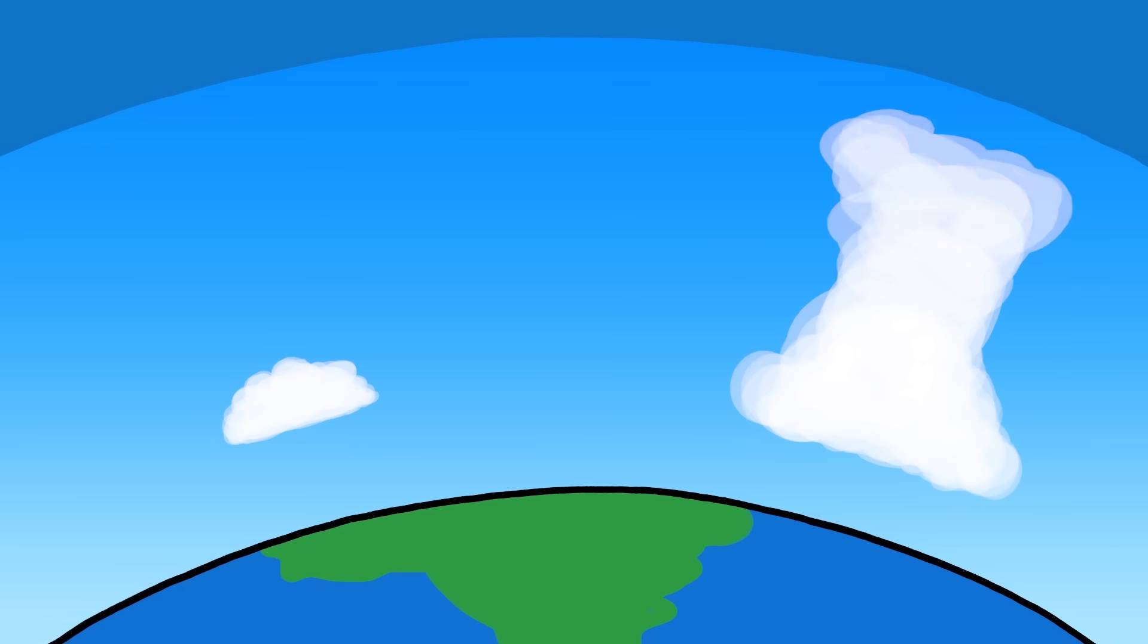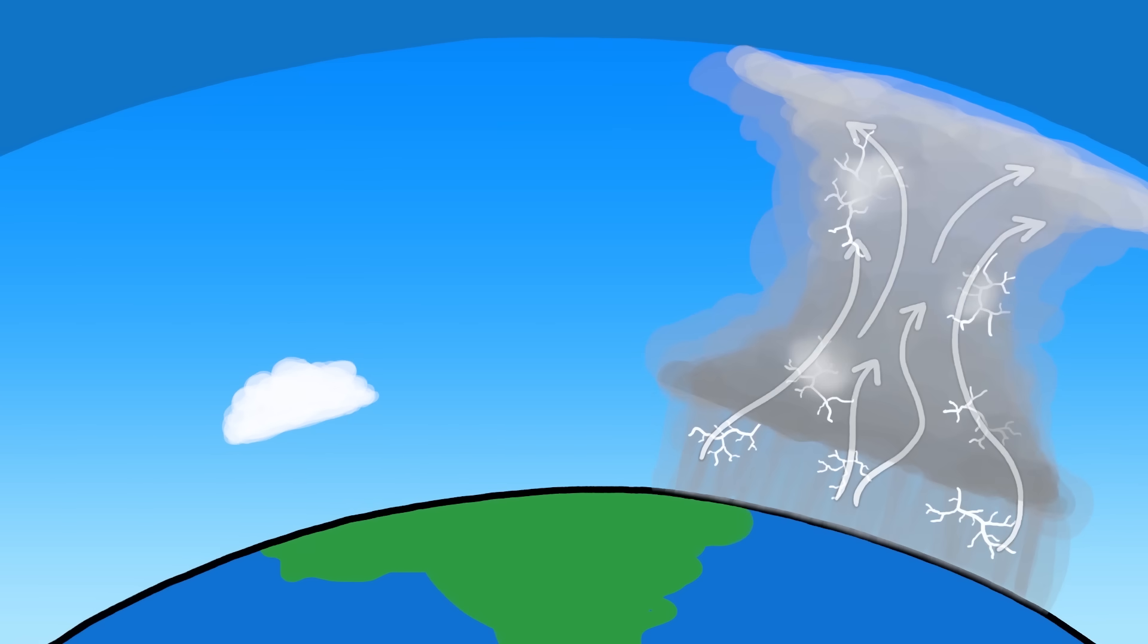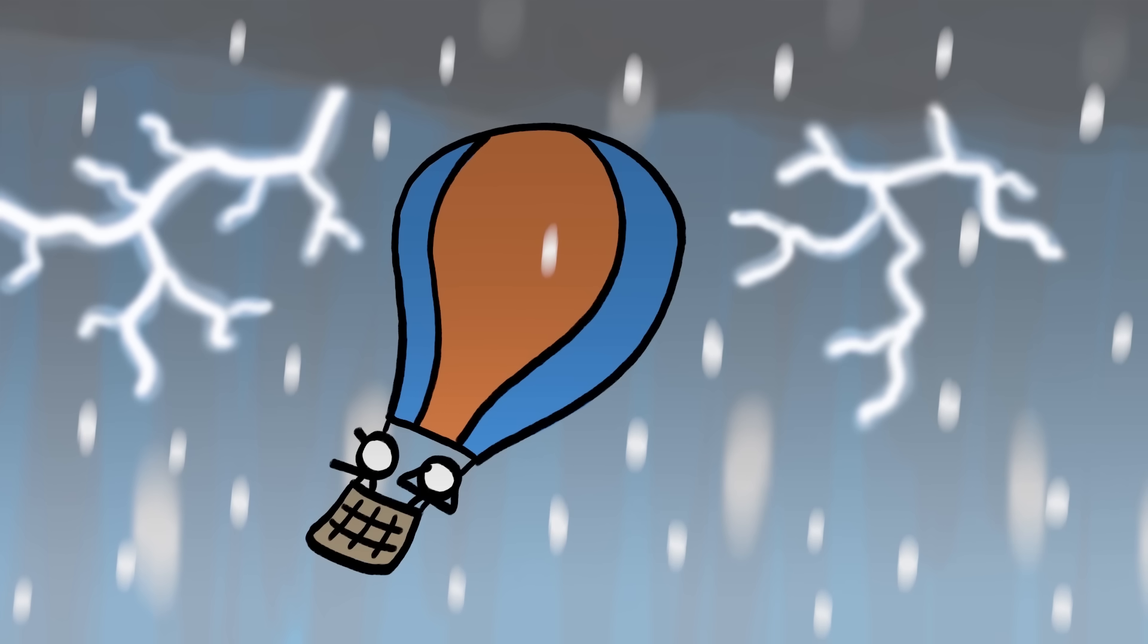And if the supply of water vapor is much larger, the energy released can produce stratosphere-high pillars of cloud with violent updrafts, fierce electrical storms, and grapefruit-sized hailstones. Not good weather for hot air ballooning.